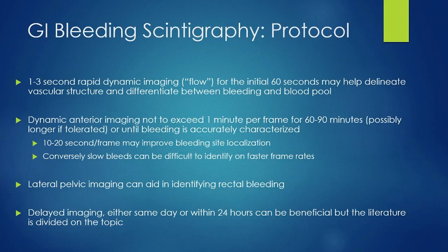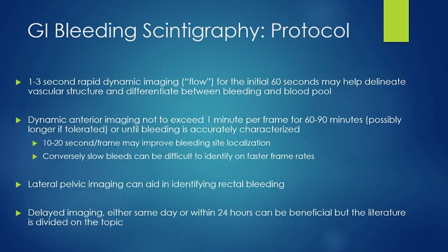What's the protocol? An initial dynamic nuclear flow phase — one to three seconds per frame for the first 60 seconds — helps delineate vascular structures to distinguish blood pool from intraluminal bleeding. Subsequently, dynamic anterior imaging with a frame rate not to exceed one minute per frame for generally 60 to 90 minutes. If you identify and have accurately characterized the bleeding, you may stop the study and get the patient to appropriate treatment. The bang for your buck after 90 minutes is pretty low.